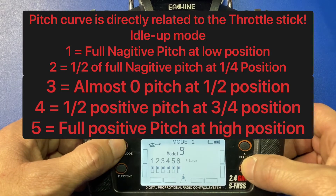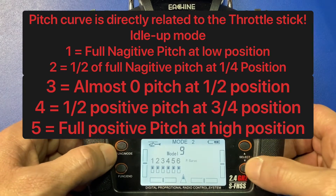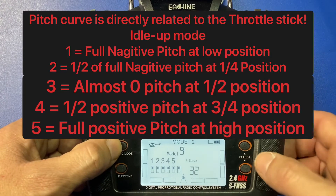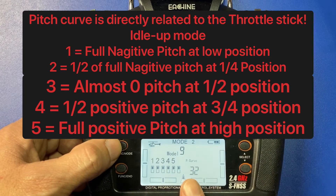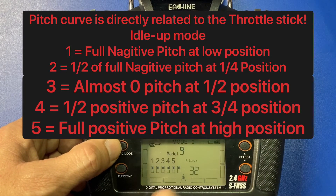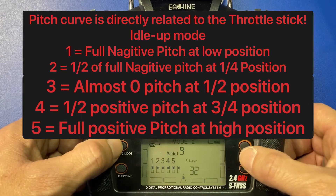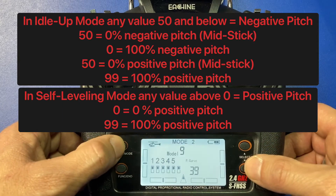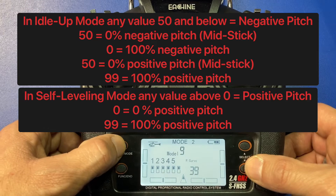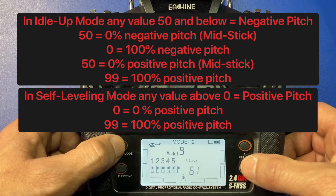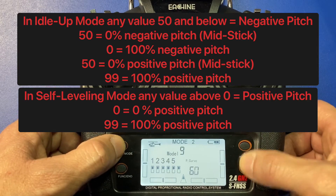Now just cycle down to the P-curve and hit the function button again. You'll notice that the value and the first parameter number is blinking. You just select the parameter number that you want to adjust — 1, 2, 3, 4, 5 — and go up or down.